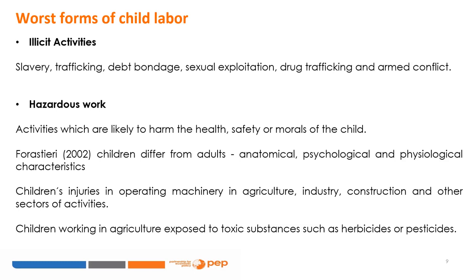Forestieri (1997) argues that children differ from adults in terms of anatomical, psychological, and physiological characteristics, which make them more susceptible to dangers posed by the absence of safety at work, with more severe effects and possibly permanent impairment. It is common to see reports of children's injuries in operating machinery in agriculture, industry, construction, and other sectors. Most children work in agricultural activities and are exposed to toxic substances such as herbicides or pesticides.